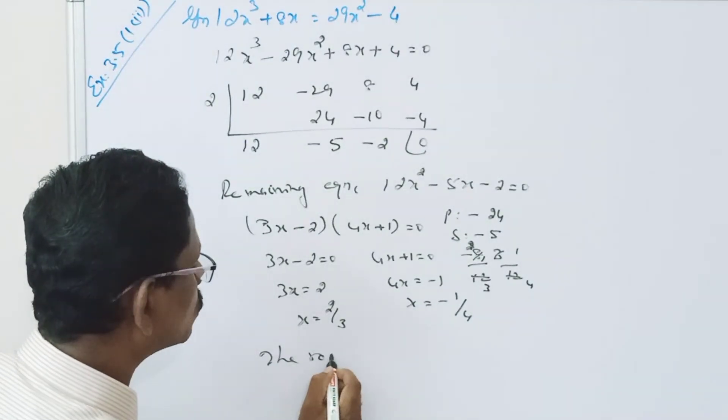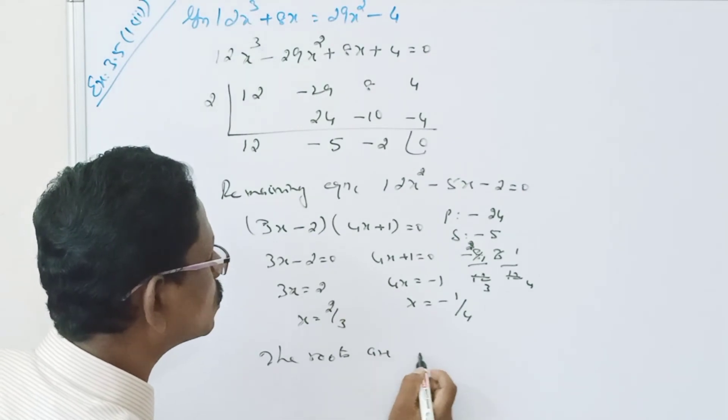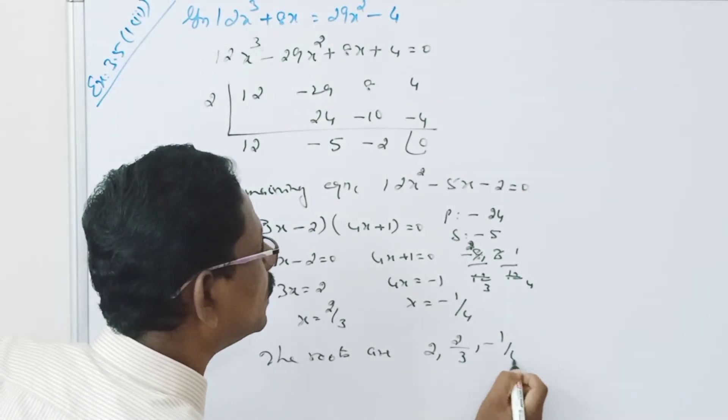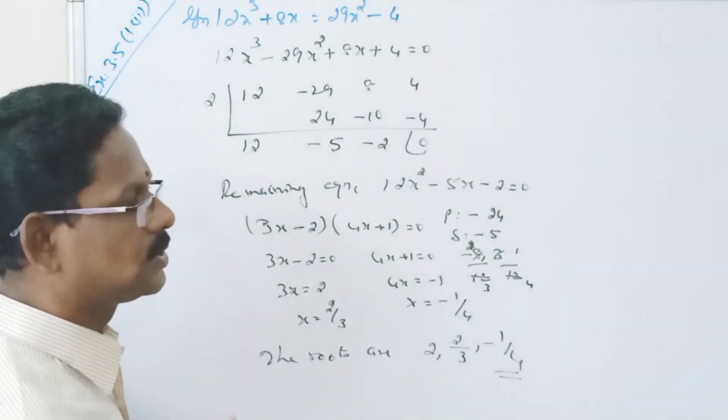Therefore, the roots are: 2, 2 by 3, minus 1 by 4. This is the answer for the question.